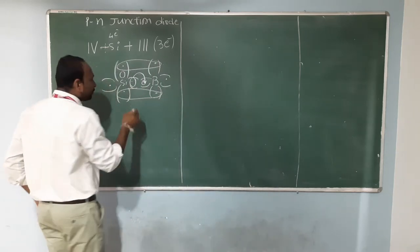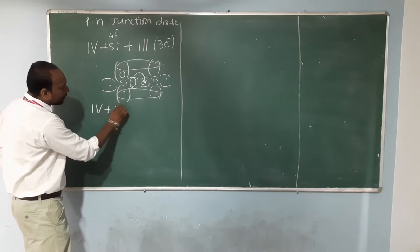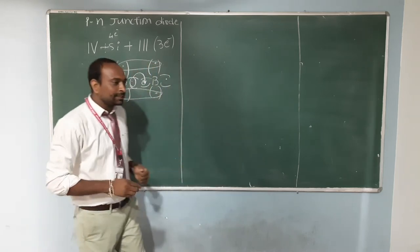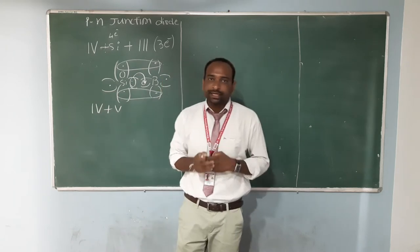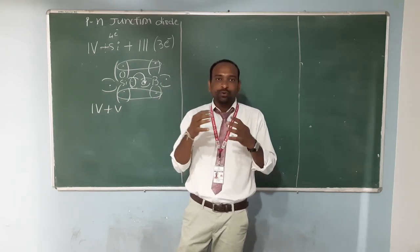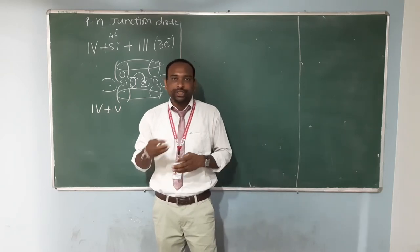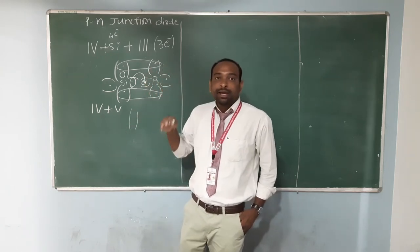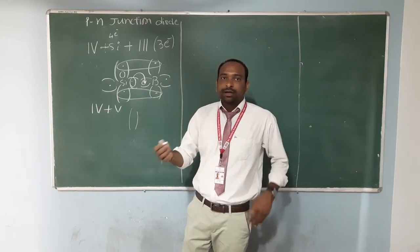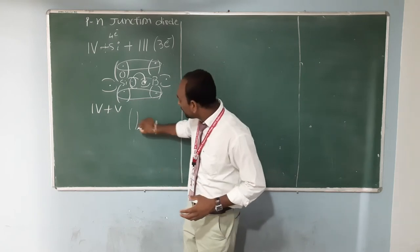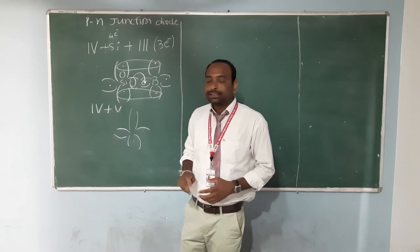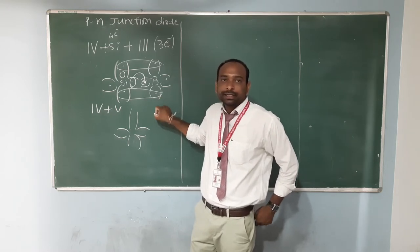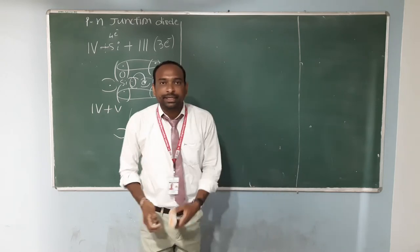Similarly, when you consider fifth group atoms — that means Phosphorus, Arsenic, or Antimony — if you add fifth group atoms to Silicon atoms, fifth group has five valency electrons and Silicon has four. By sharing four electrons each, they make four covalent bonds. But Phosphorus has an extra electron. So electrons are the majority carrier. In N-type semiconductors, electrons are the majority carrier, and in P-type semiconductor, holes are the majority carriers.